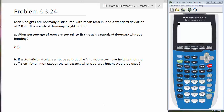This is a problem from section 6-3 in your book, similar to a homework problem. It says that men's heights are normally distributed with a mean of 68.8 and a standard deviation of 2.8. A standard doorway height is 80 inches, and they're asking what percentage of men are too tall to fit through a standard doorway without bending.